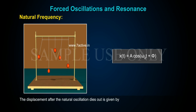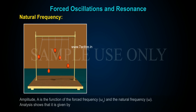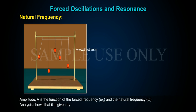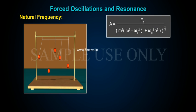The displacement is given by x(t) = A cos(ωd·t + φ), where the amplitude A is a function of the driving frequency ωd and the natural frequency ω. Analysis shows that: A = F₀ / [m²(ω² − ωd²)² + ωd²b²]^(1/2).